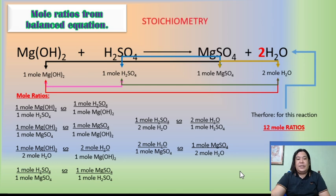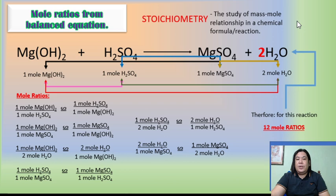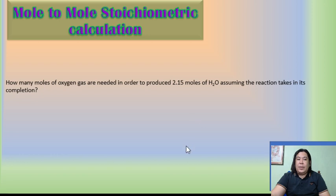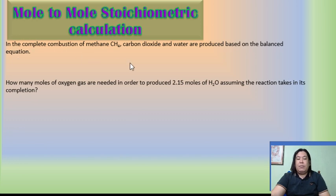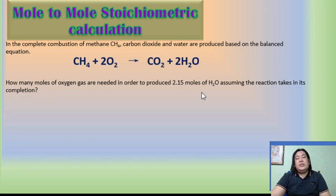Stoichiometry is the study of mass-mole relationships in a chemical formula or reaction. For our first example, mole-to-mole stoichiometric calculations: in the complete combustion of methane (CH₄), carbon dioxide and water are produced. Before solving any stoichiometric problem, make sure the chemical equation is always balanced. In combustion of hydrocarbons, complete combustion produces CO₂ and water; if it produces CO instead, that is incomplete combustion.